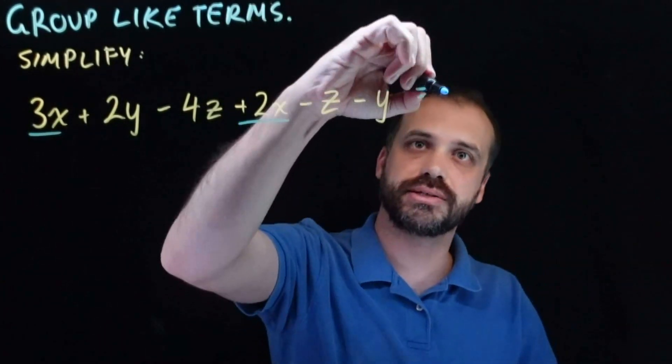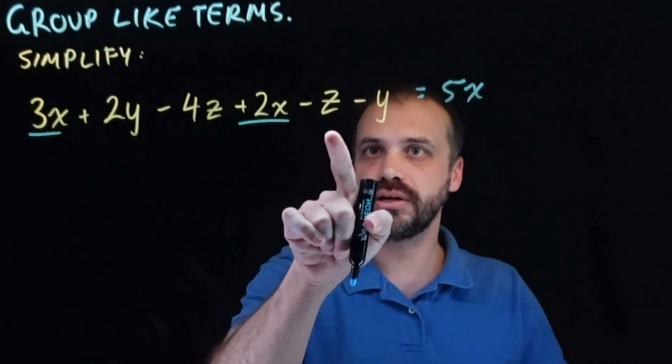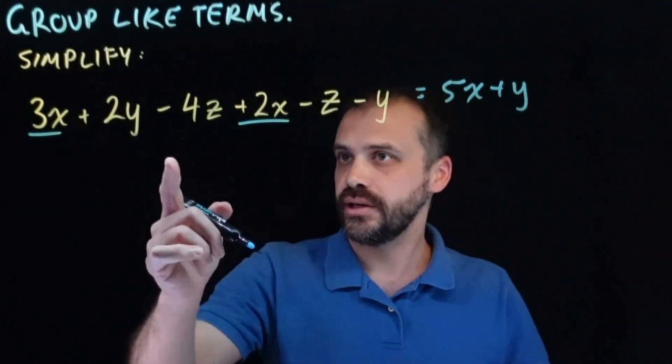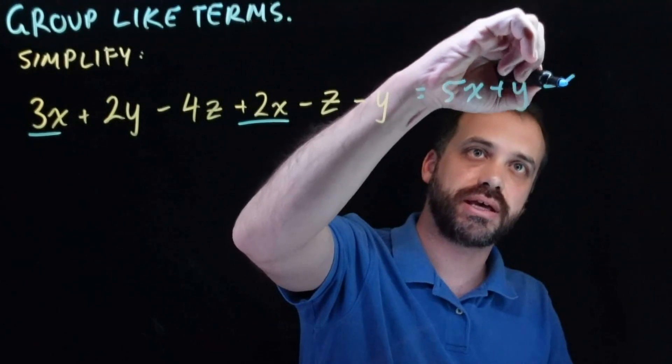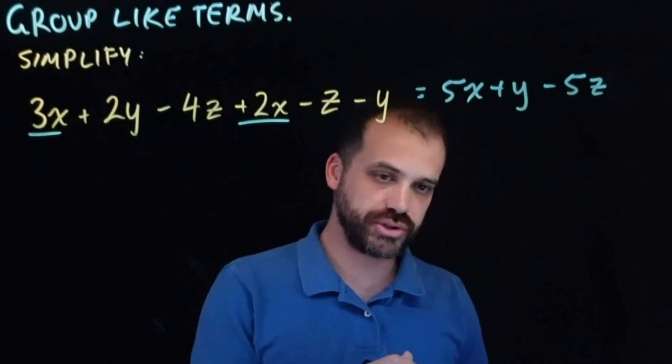3x plus 2x is 5x, and 2y minus y is 1y or just y, and negative 4z minus z is negative 5z. There you have it, you have simplified by grouping like terms.